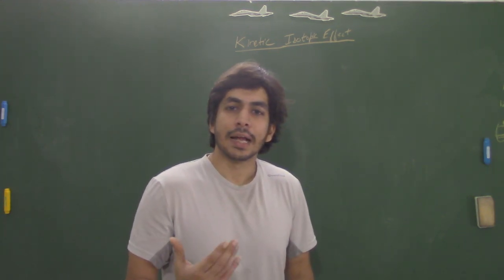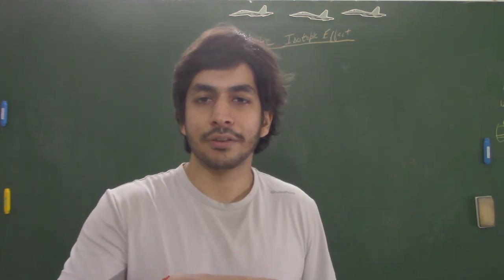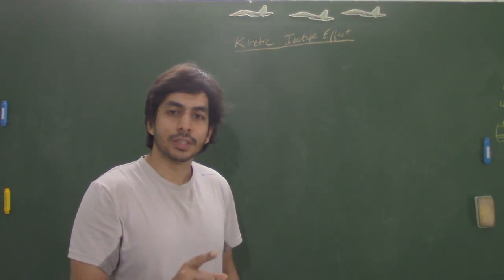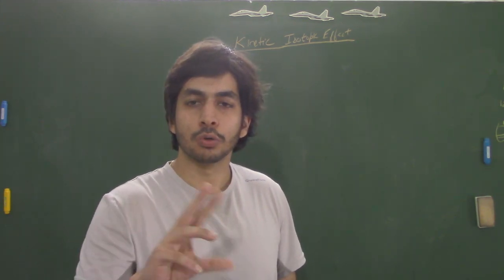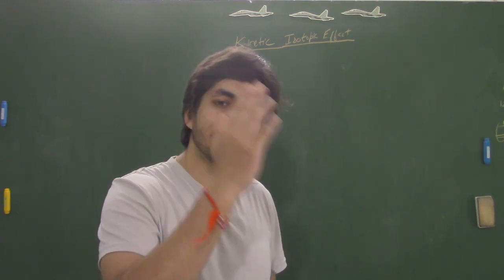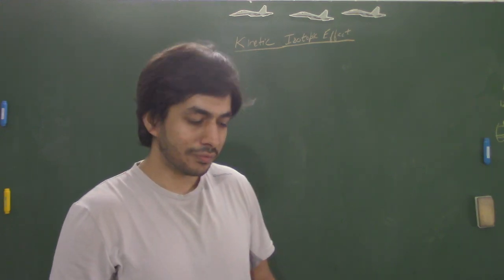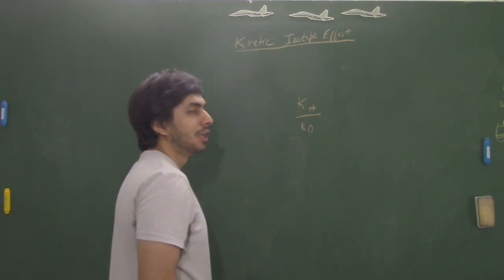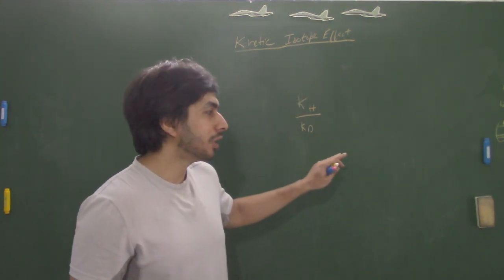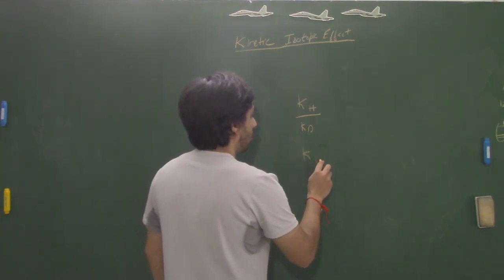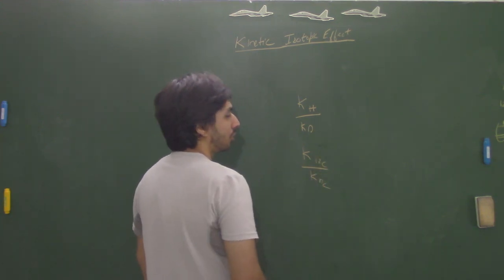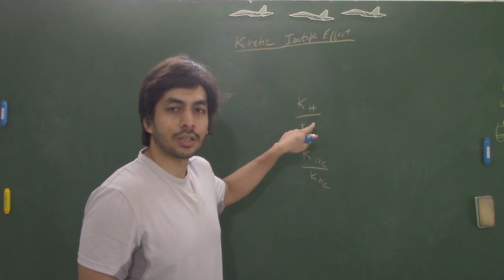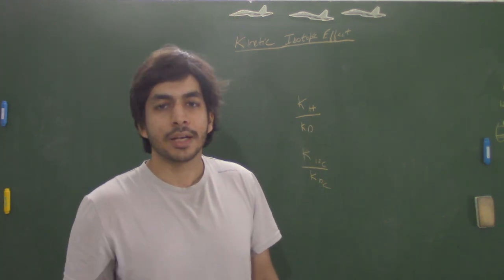Why do we call it the deuterium kinetic isotope effect? Because we are taking the isotope as deuterium. We can also take 12C and 13C, but the change in atomic mass when we go from hydrogen to deuterium is almost double. Whereas if we go from 12C to 13C, the difference will be very negligible. So when we measure the KH upon KD values — the rate constant when hydrogen is present versus when deuterium is present — there will be a significant change, making it experimentally convenient to measure. That is why it is specifically called the deuterium kinetic isotopic effect.